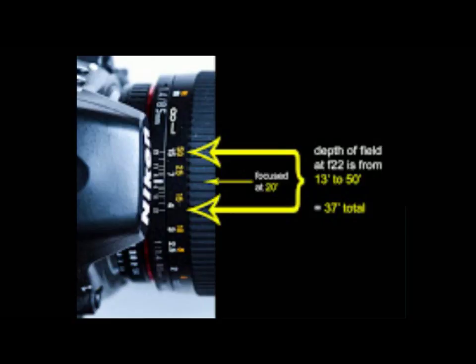The lens is focused at 20 feet and your F-stop setting is F22. Going by the guide on this lens, it says that everything from 13 feet to 50 feet is going to be in focus — so that's a total of 37 feet. If you get comfortable with using different apertures, you can get very specific on what you have in focus and what you don't. And that's a big plus when you're trying to do creative photography.